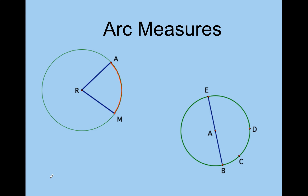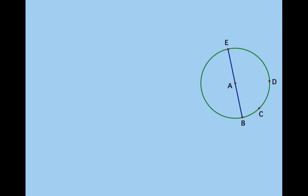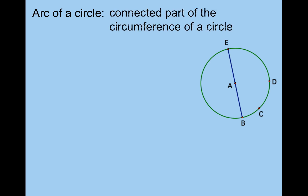Hello everybody, today we're going to talk about circles and arc measures. So first thing we want to talk about is what is an arc of a circle. An arc of a circle is a connected portion of the circumference of a circle — the connected portion of this outside ring of the circle.